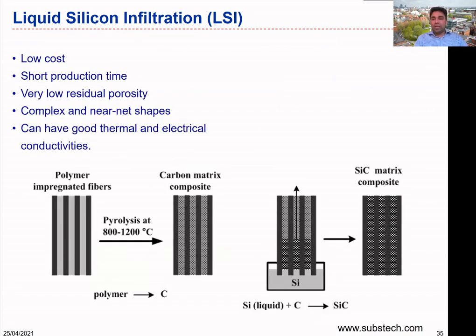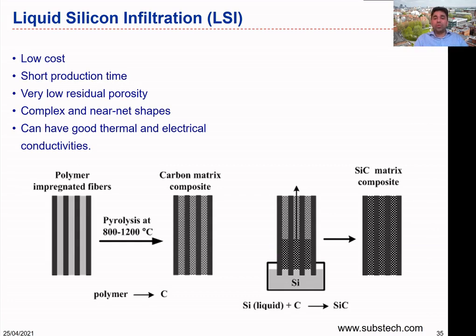Looking at the advantages and disadvantages of this process: it could be low cost compared to other processes like the CVI process. However, compared to polymeric composite production, this could be costly because it involves high temperatures of about 1000 degrees, requiring special facilities. But compared to other ceramic matrix composite processes like the CVI process, this is a relatively low-cost process. It also has a short production time — depending on the component size and infiltration rate, it takes some time, but relative to the CVI process which could take a week, this process is faster.